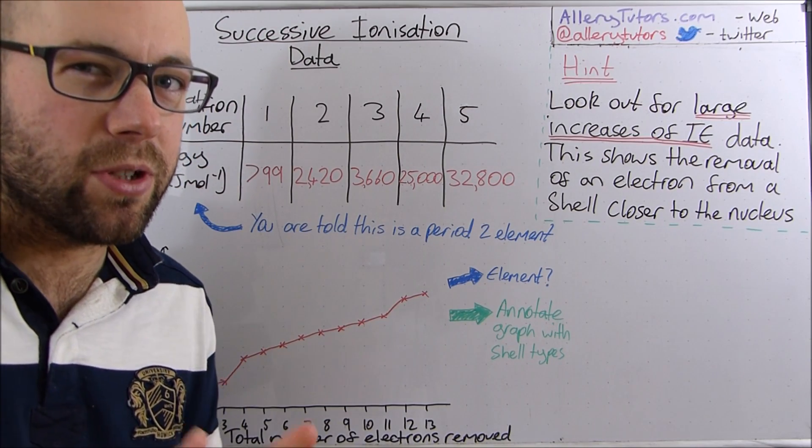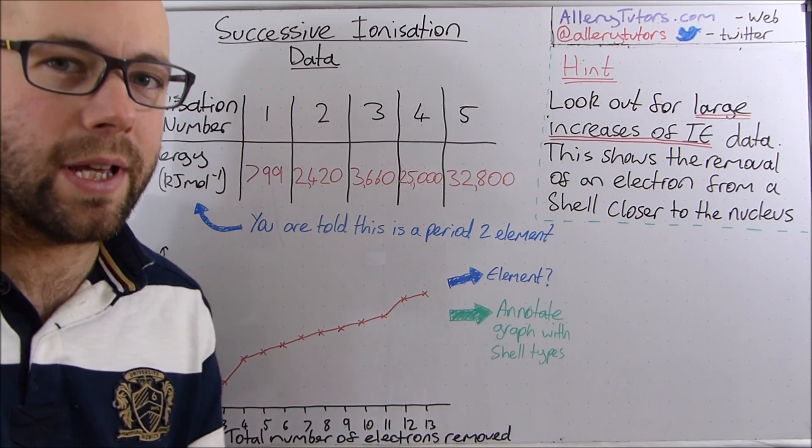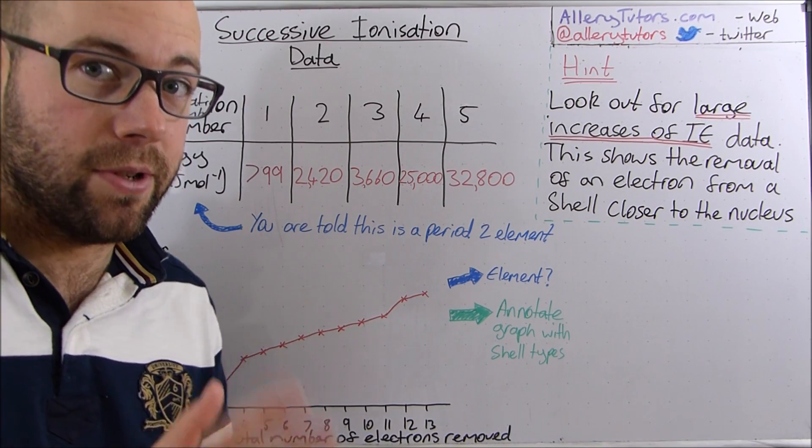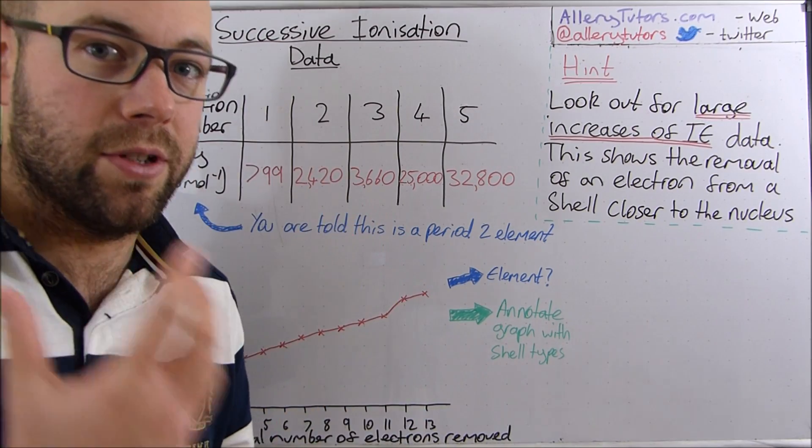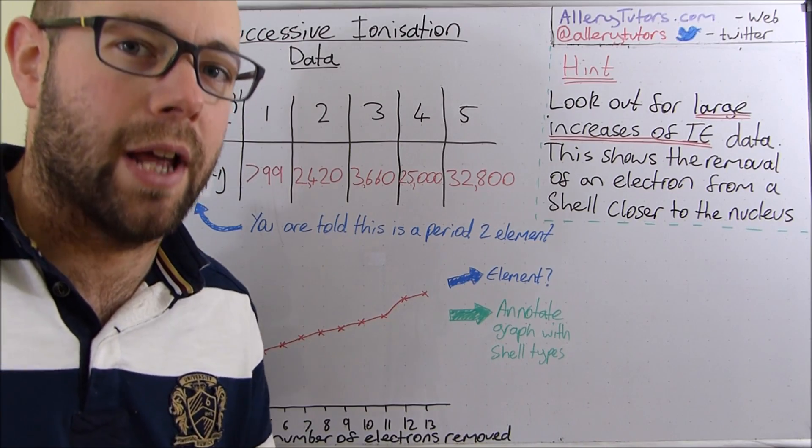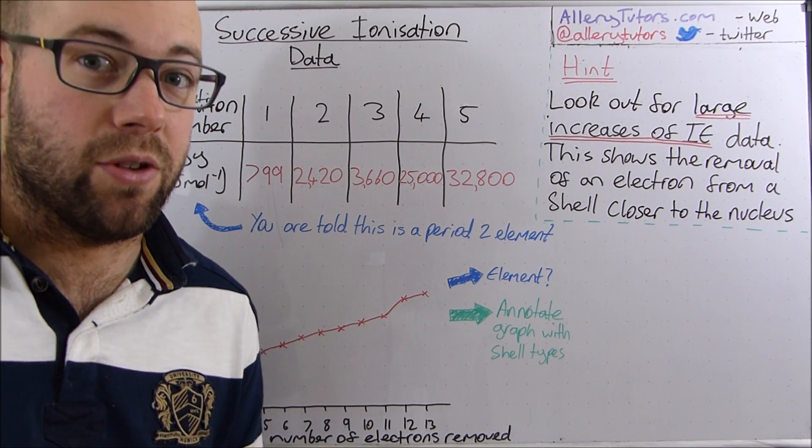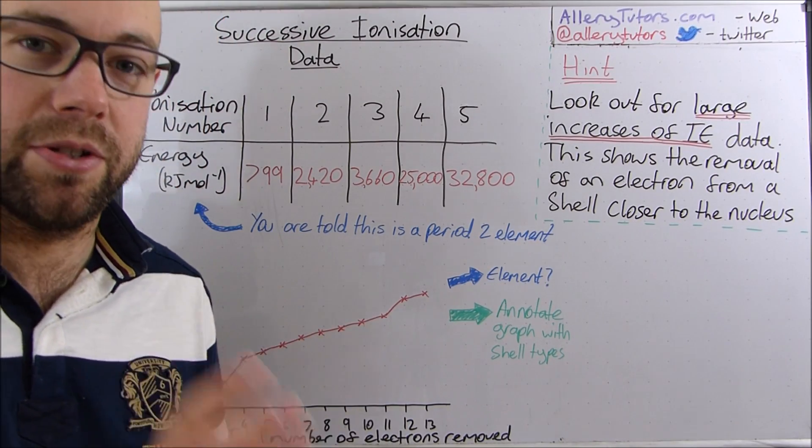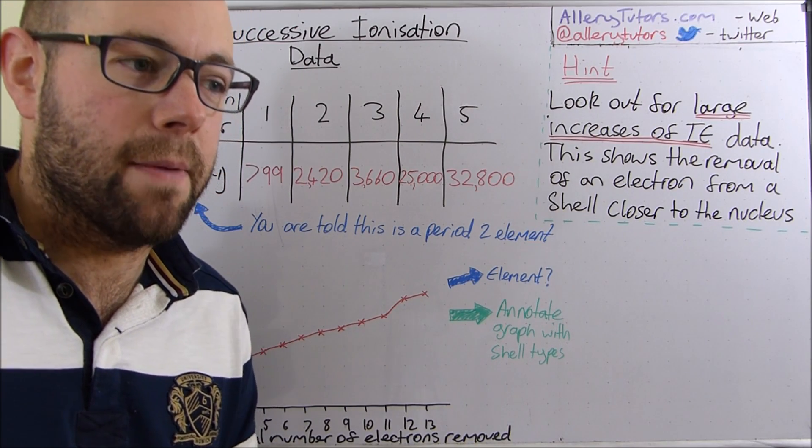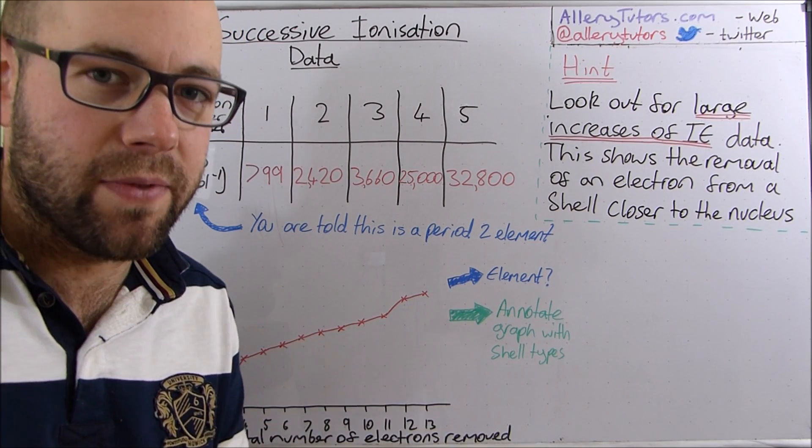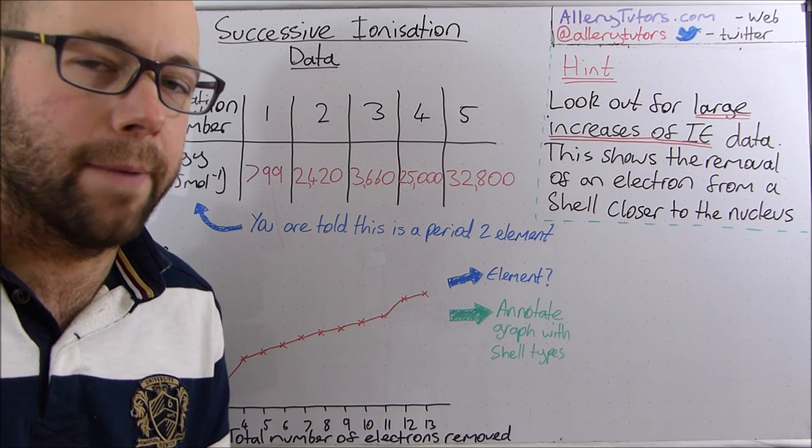So the first thing we're going to do is look at two different types. We're going to look at ones with data where they'll give you a set of numbers and then you have to use those numbers to identify an unknown element. I'm also going to look at one with a graph or plotted results on a chart and from that we can identify different shell structures.